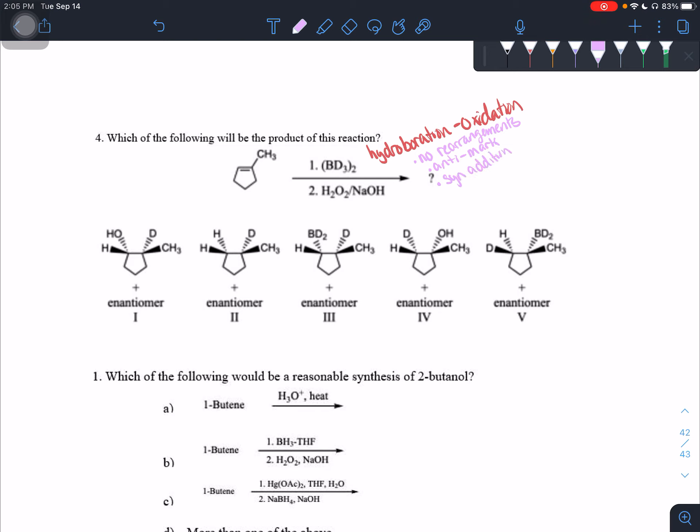It is syn addition. Syn addition just means both groups, the alcohol and the hydrogen, need to be added either both wedged or both dashed. Okay. So now that we know this stuff about hydroboration oxidation, we go into the molecule.